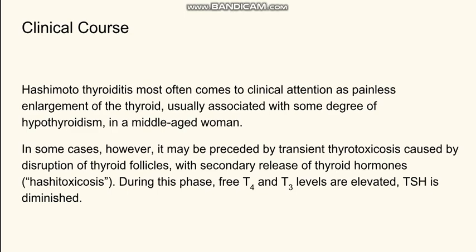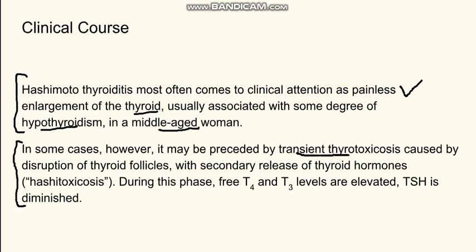Going to the clinical course: any thyroid problem mostly comes to attention when there is an enlargement of the thyroid. Mainly, if there is thyroid enlargement in a middle-aged woman, we suspect autoimmune disease. In a classic case of Hashimoto's thyroiditis, there is hypothyroidism because of injury to the thyroid epithelium. However, when the disease starts, sometimes there is transient thyrotoxicosis — an increase in thyroid hormones — because when the thyroid follicles get injured, they release thyroid hormones first. This is known as Hashimoto's toxicosis.